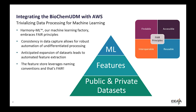Your feature engineering is where you get the most gains. Having the BioChem UDM using the FAIR principles allows us to anticipate the expansion of those data sets, so when new data is added we don't have to go back and rewrite our programs to process it — it just comes right through because we've already anticipated those expansions in the BioChem UDM.